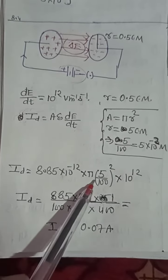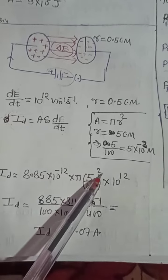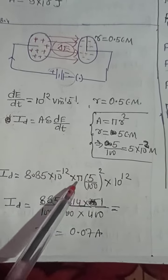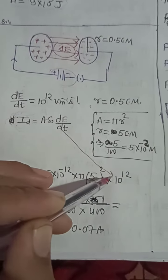Value of epsilon naught, pi, 5 upon 100 whole power 2, conversion pi r square formula, area of circle. And this is the dE by dt. You have to see that is the dE by dt.